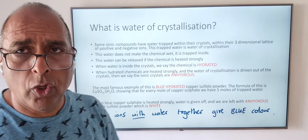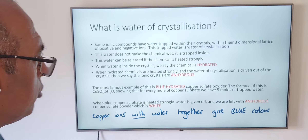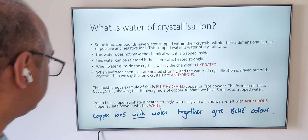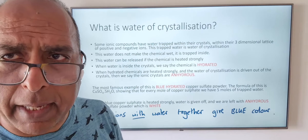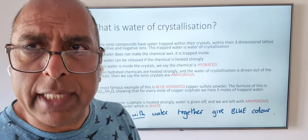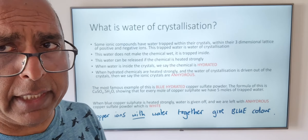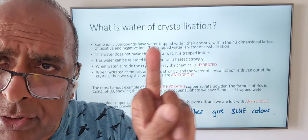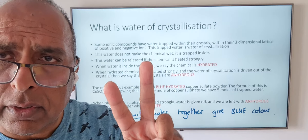Some ionic compounds have water trapped within their crystals. The water is trapped within their three-dimensional lattice of positive and negative ions, and the trapped water is what we know as water of crystallization. The water does not make the crystals wet. The water can be released if we heat the chemical very strongly — then the water of crystallization can be driven off. When the water is inside the crystals, we say the crystals are hydrated. When we drive off the water of crystallization, we say the ionic crystals are anhydrous. So two words: hydrated and anhydrous. Hydrated means with water; anhydrous means without water.